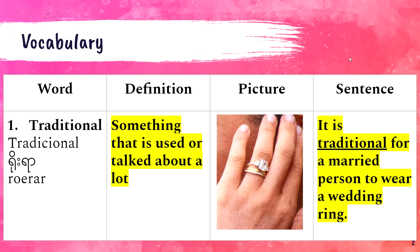Traditional means that it is something that is used or talked about a lot. It is traditional for a married person to wear a wedding ring — that's something that is followed a lot, something that a lot of people do. It's also traditional maybe when you go to church to dress nicely. It's traditional at Christmas time to give a gift to someone. That's what traditional means — it's something that is done a lot or done on a regular basis, usually for a specific culture or group of people.